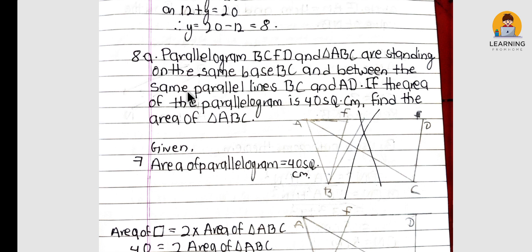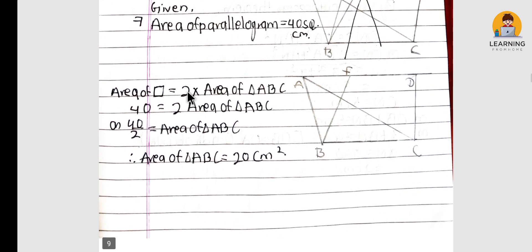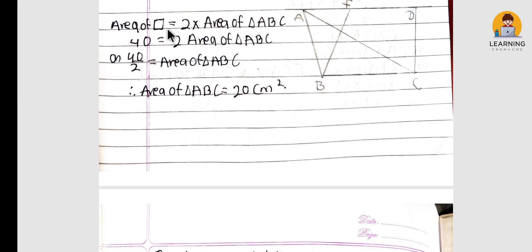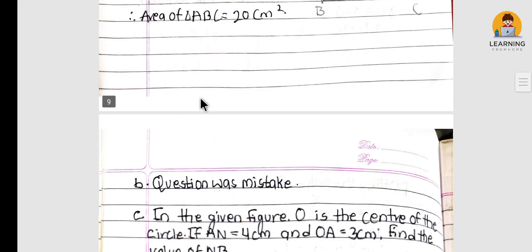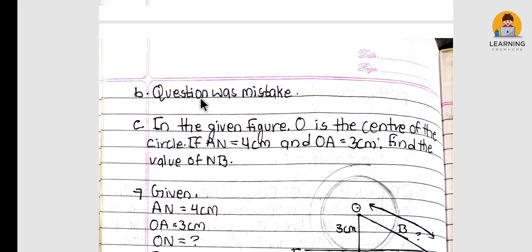Parallelogram BCFD and triangle ABC are standing on the same base BC and between the same parallel lines BC and AD. If the area of the parallelogram is 40 cm², find the area of triangle ABC. Area of parallelogram = 2 × area of triangle ABC, so 40 = 2 × area of triangle ABC, giving area of triangle ABC = 20 cm².